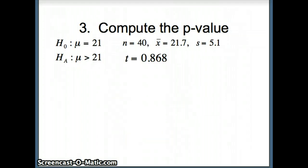Next step is finding the p-value. There's H naught and H A, our statistics, and our test statistic. The key thing is H A says mu is greater than 21, so that's a one-tailed test to the right. Our degrees of freedom are n minus 1, so 40 minus 1 equals 39. We have a t with 39 degrees of freedom.